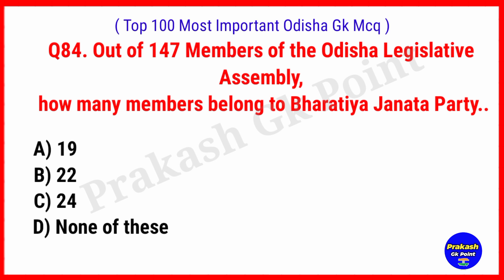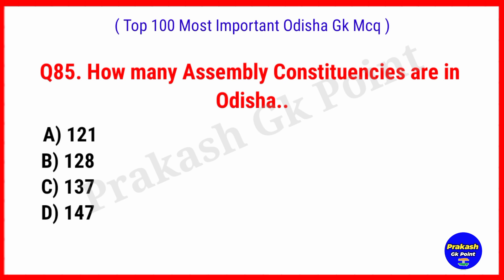Out of 147 members of the Odisha Legislative Assembly, how many belong to Bharatiya Janata Party? Answer: Option B, 22. How many Assembly Constituencies are in Odisha? Answer: Option D, 147 constituencies.